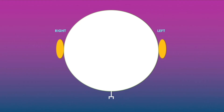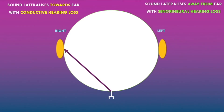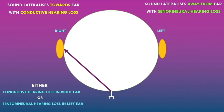Now consider a scenario where the sound waves lateralize to the right ear. Lateralization in the Weber test indicates asymmetric hearing loss. Since sound lateralizes towards the ear with conductive hearing loss, this either indicates conductive hearing loss in the right ear, or sensorineural hearing loss in the left ear, since sound lateralizes away from the ear with sensorineural hearing loss.